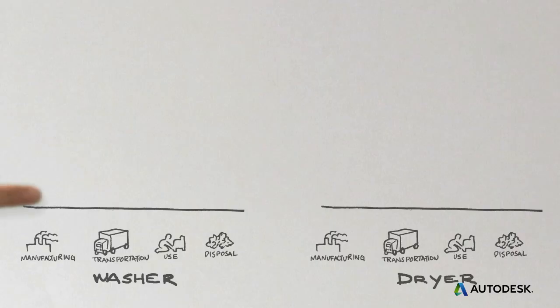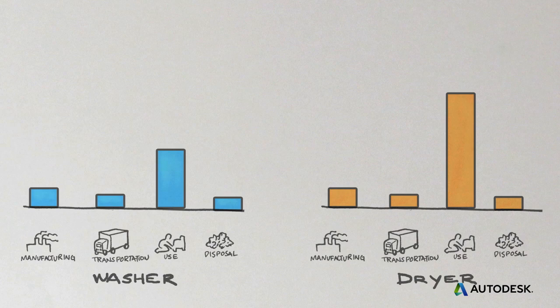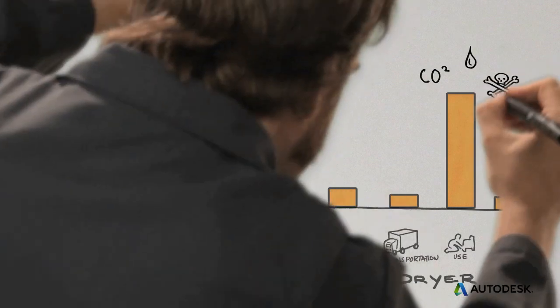The washer and dryer impact the environment through their manufacturing, distribution, use, and disposal. At each one of these stages there may be greenhouse gas emissions, water pollution, air pollution, toxins, or other environmental impacts. Your analysis should measure these impacts to the best of your ability.